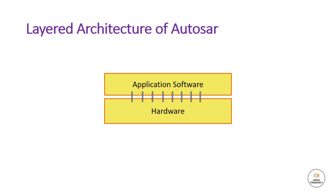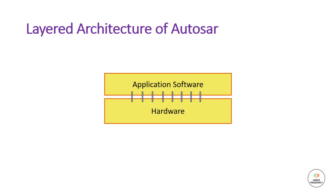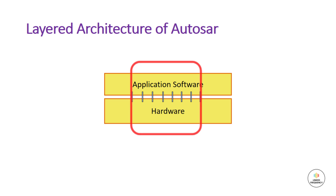Let us look into the first image that shows an application software and a hardware — both are interconnected. Previously, software modules from different manufacturers could not be merged and installed on a single ECU because each firm had its own software architecture. Thus a single supplier had to create the entire software for the ECU. As you can see in the image, the software is completely dependent on the hardware, and the dependency on both software and hardware was on the higher side.